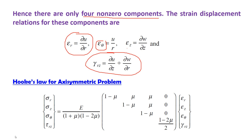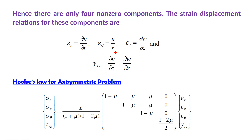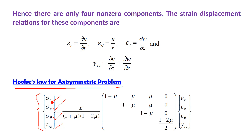The strain-displacement relations are: εr = du/dr, εθ = u/r, εz = dw/dz, all available in Theory of Elasticity books. The Hooke's Law for axisymmetric problems has 4 stress components: σr (radial), σz, σθ (angular), and τRz (shear) — three normal stresses and one shear stress — related to the strain components εr, εz, εθ, and γRz.